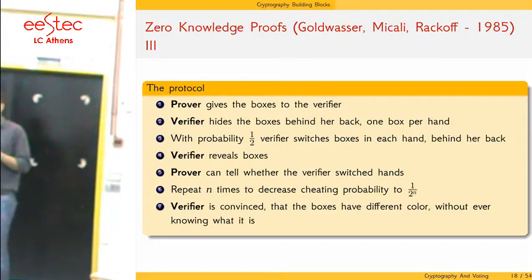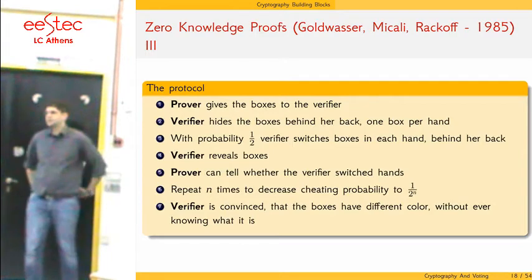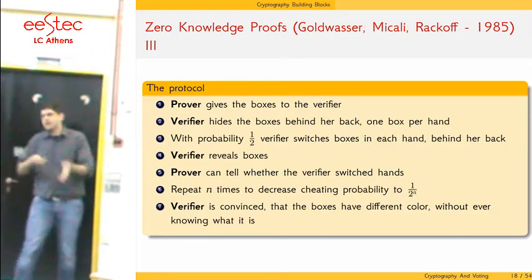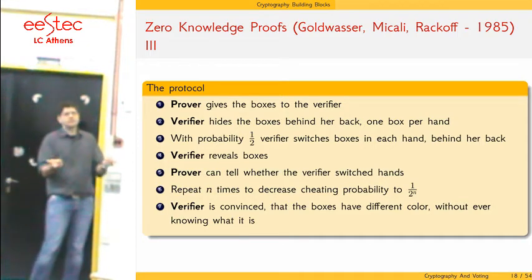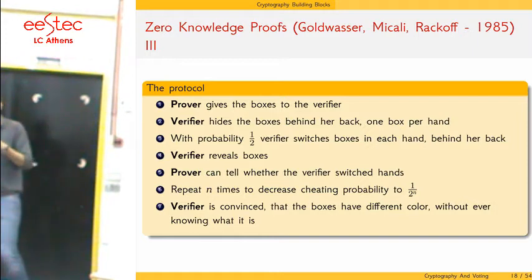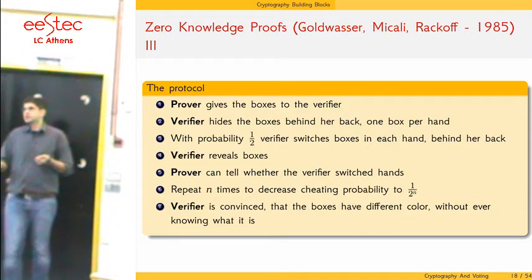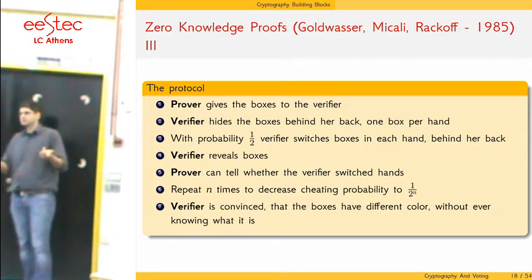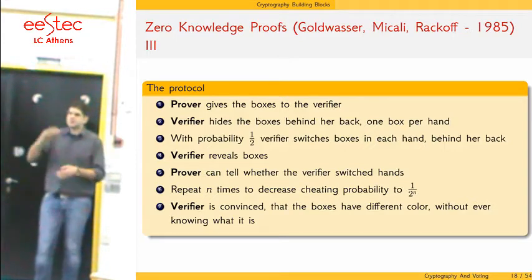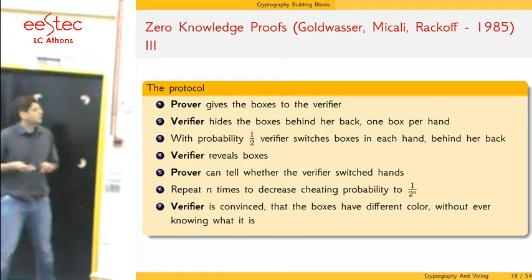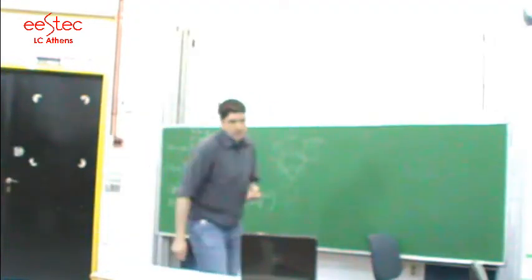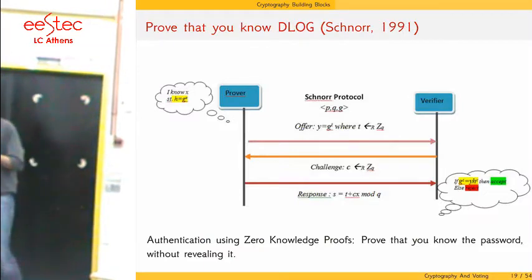An example: imagine the Verifier is colorblind and the Prover holds two identical boxes of different color. The Prover wants to convince the Verifier that the boxes have different colors without the Verifier learning what the colors are. The Verifier hides the boxes behind his back, may or may not switch them, and then presents them again. The Prover, who can see the colors, can immediately tell if they were switched or not. This experiment is repeated many times, and after enough repetitions the Verifier is convinced that the boxes are indeed different colors.